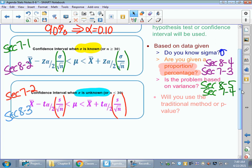Do you know sigma? If so, and you're using mean, you're going to go to Section 7.1 and 8.2. Start with the hypothesis test first. Do the confidence interval second to verify your decision, reject or do not reject. Are you given a proportion or a percentage? If you're given a proportion or a percentage, we're talking about a hypothesis test from Section 8.4 and our confidence interval from Section 7.3. Is the problem based on variance or standard deviation? If it is, then you are going to Section 8.5 for your hypothesis test and Section 7.4 for your confidence intervals. And last but not least, are you going to use the traditional method of hypothesis testing or p-value?